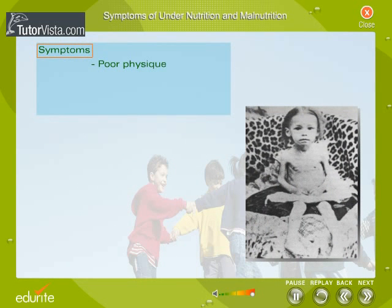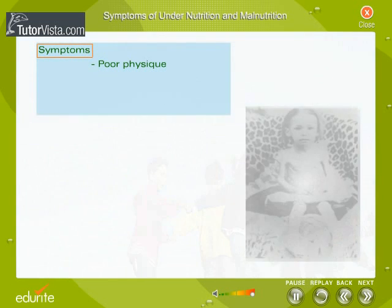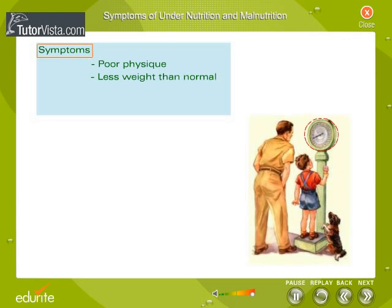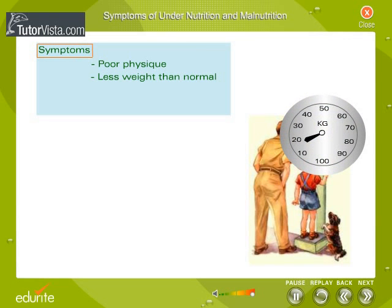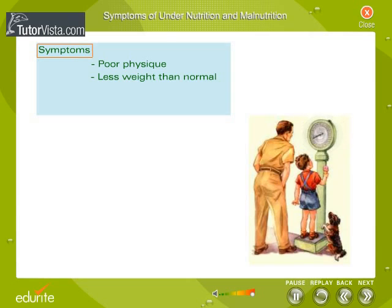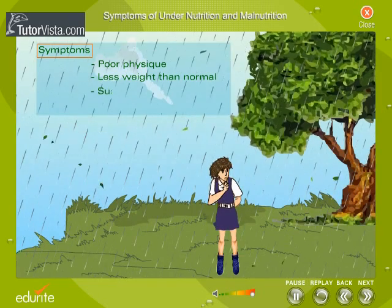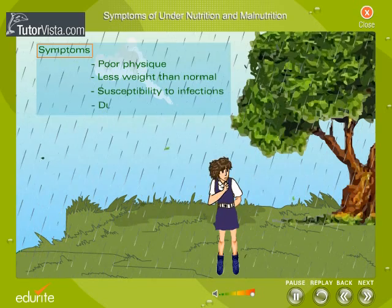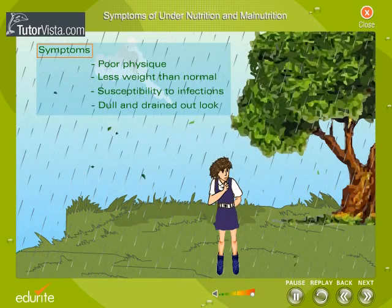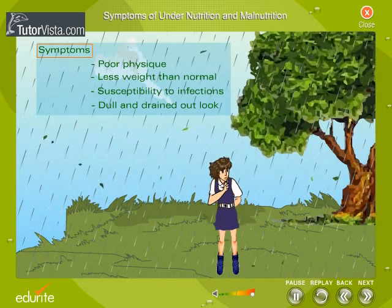One of the major symptoms is poor physique. The child may be very thin with underdeveloped muscles for their age, and may weigh less than the normal expected weight. Such a person is susceptible to infections — slight changes in weather conditions or slight exposure to extreme conditions will lead to infections. The person will look dull and drained out, and incapable of physical exertion.